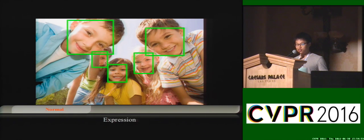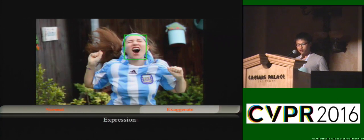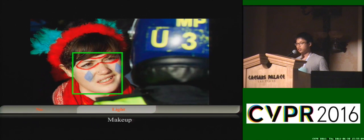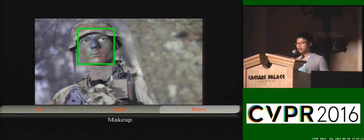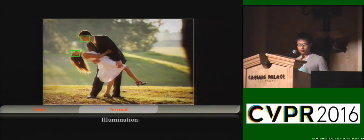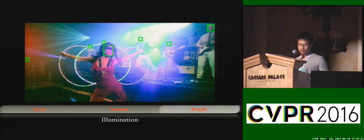Our dataset also has faces with different expressions, grouped as normal expression and exaggerated expressions. We also consider faces with different makeups, like no makeup, light makeup, and heavy makeup. Similarly, the dataset has images of different illuminations, like dark, normal, and bright.